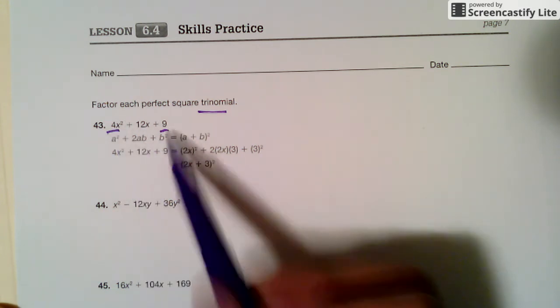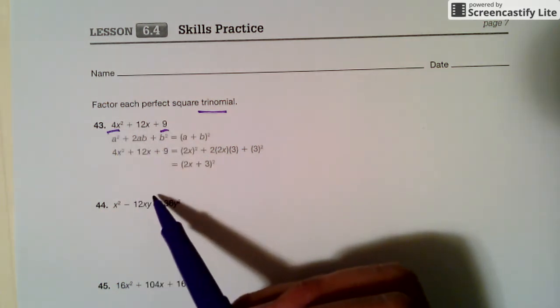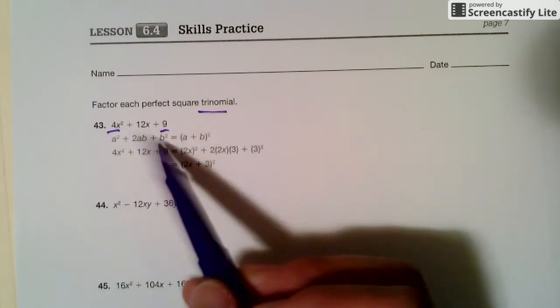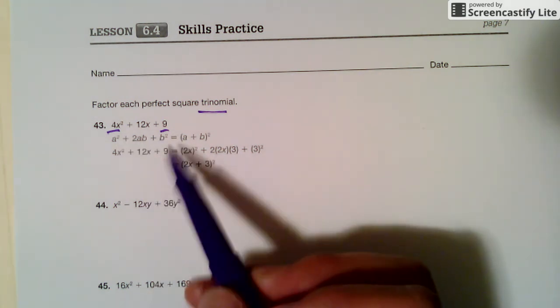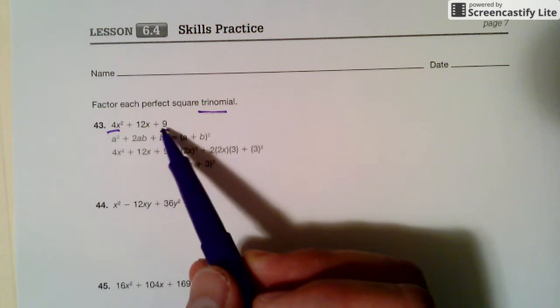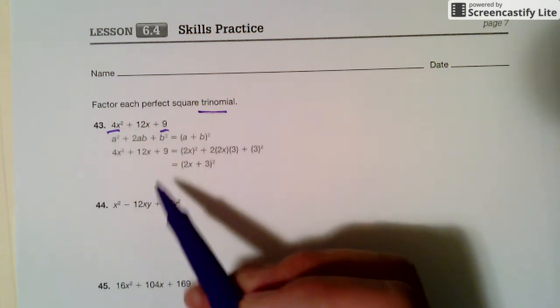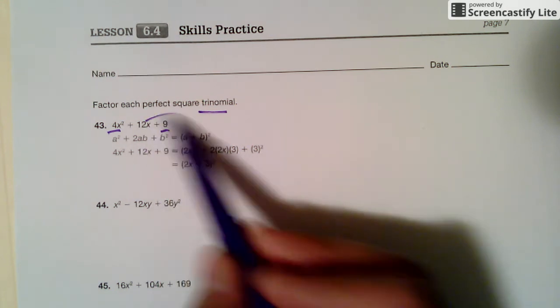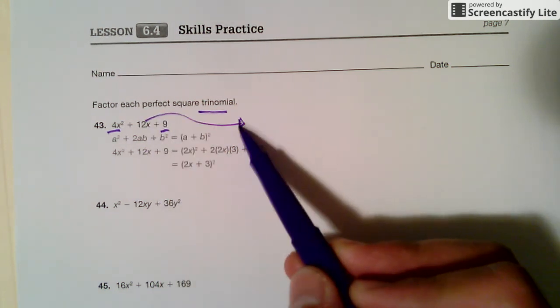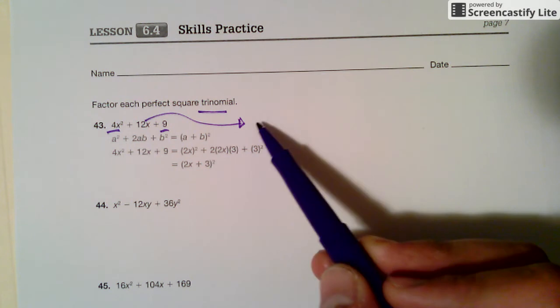So four is a perfect square number, nine is a perfect square number. That's what you want to look for. If they're not, then you can't use this method. But since nine and four are perfect squares and x is here, you can. The middle number is pretty much, you can check. It's just like a check to see if this method applies.